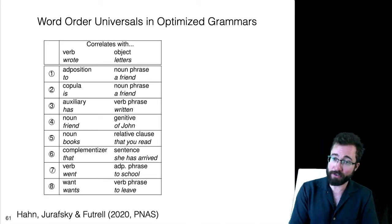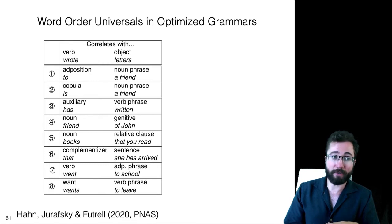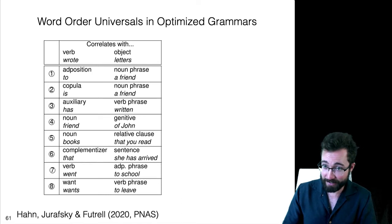Here's the results. I'm going to show here results for eight of these Greenberg universals. Each of these eight universals is a correlation between the order of two elements and the order of the verb and the object. Like the first one is whether there is a correlation between the order of the adposition and the noun phrase and the order of the verb and the object.